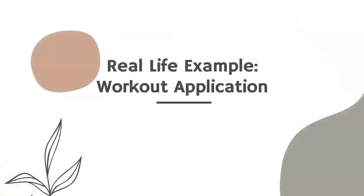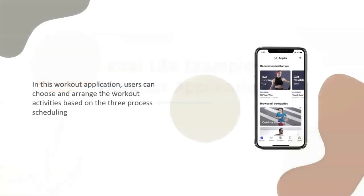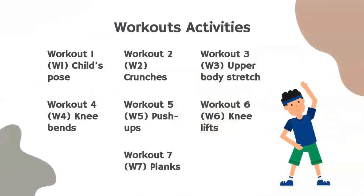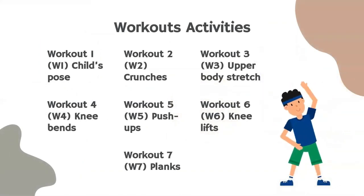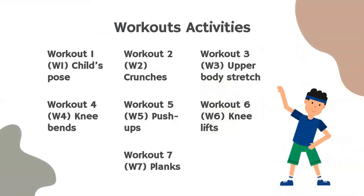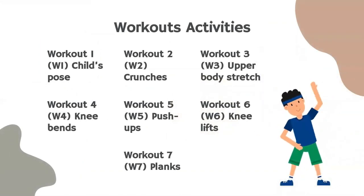So we have a real-life example, which is a workout application. In this workout application, users can choose and arrange their workout activities based on the three process scheduling types. This is the list of workout activities — we have seven workout activities.